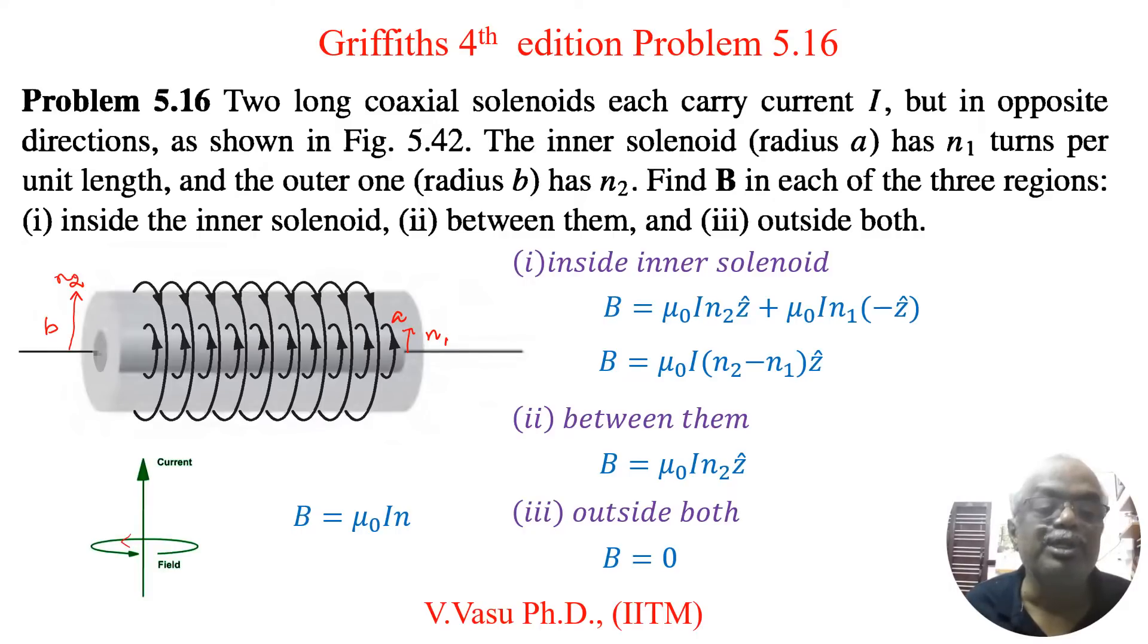So due to inner solenoid this current flows to the negative Z direction. So because it is counter-clockwise, let us say this is Z direction. So naturally it is minus Z direction.